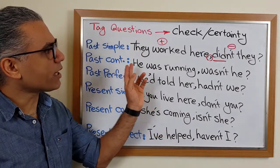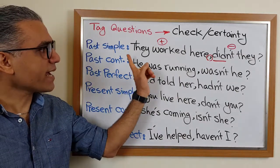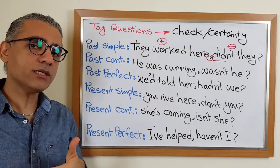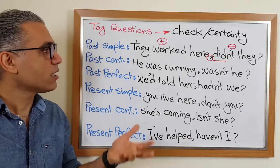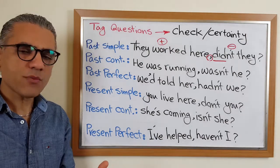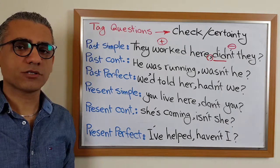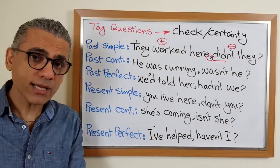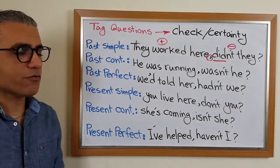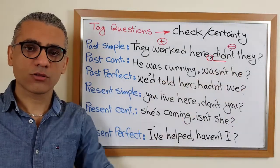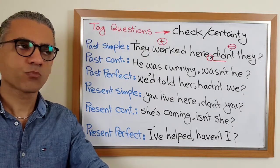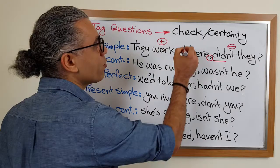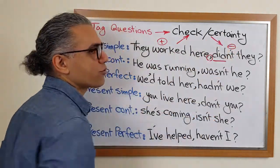I can ask a tag question in two ways, and it's all about intonation. 'They worked here, didn't they?' — using the tone of a statement means I'm sure of the information. 'They worked here, didn't they?' — using the tone of a question means I'm really asking, checking my information. If you use the tone of a question, you are checking for information. If you use the tone of a statement, you are expressing certainty. If your intonation goes up, you are checking; if it goes down, you're expressing certainty.